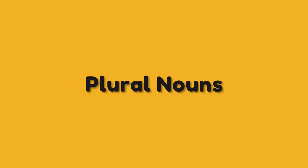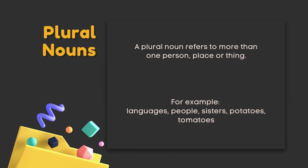Plural nouns. A plural noun refers to more than one person, place, or thing. For example: languages, people, sisters, potatoes, tomatoes.